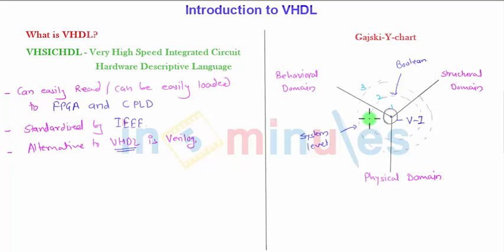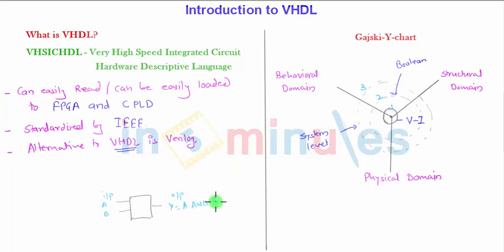Now let us see what the behavioral domain is, what is structural, and what is the physical domain. In the behavioral domain, the name itself suggests how the output should behave. For example, take an AND gate: there is a box with two inputs and one output. If the inputs are A and B, the output should be Y = A AND B. So in the behavioral domain, only the number of inputs and outputs are specified.